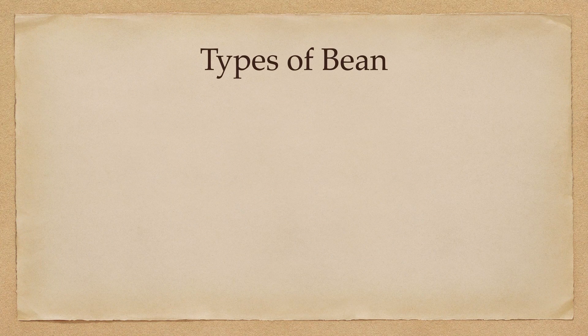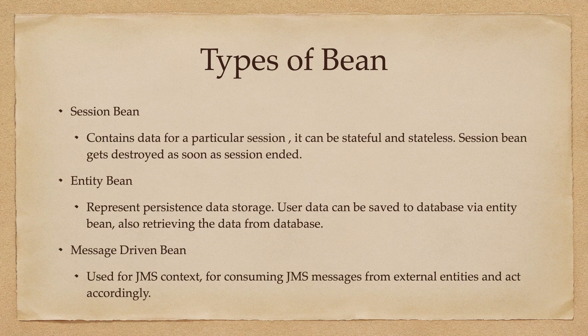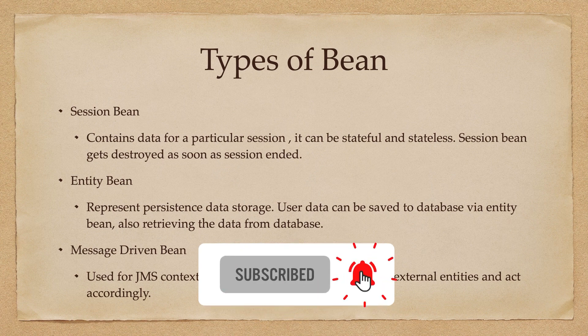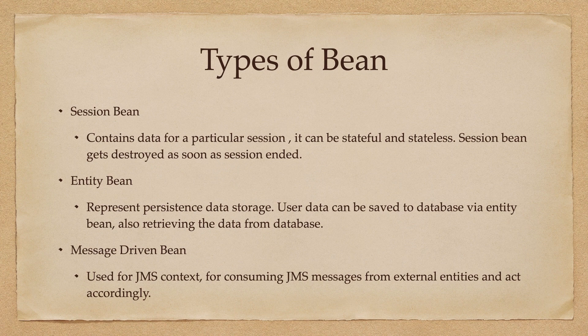We also need to understand the different types of beans available in EJB. There are three major types: the first is Session Bean, the second is Entity Bean, and the third is Message Driven Bean. We are mostly not going to use the Entity Bean because it is a core concept in EJB 2.0, and we are using EJB 3.0. Session beans contain the data for a particular session — from the name itself you can understand the bean is for a session — and it can be stateful or stateless.